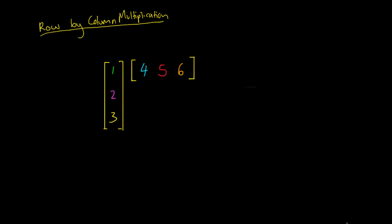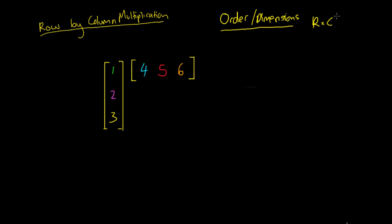The most important thing when we're doing these row and column multiplications is the matrix order, or the dimensions of the matrix. When we're working out the order or the dimensions of a matrix, we use this R multiplied by C rule — so we say a matrix is some number of rows multiplied by some number of columns.